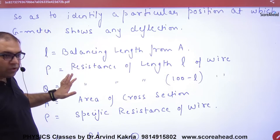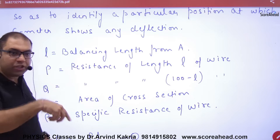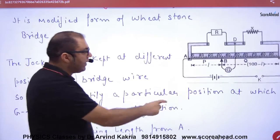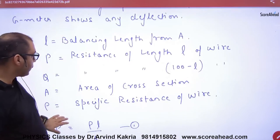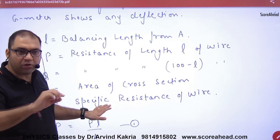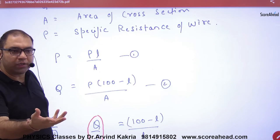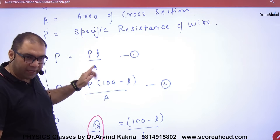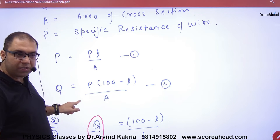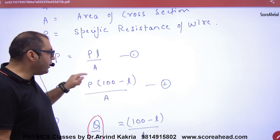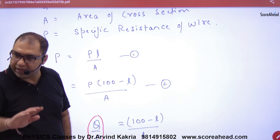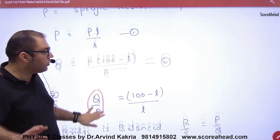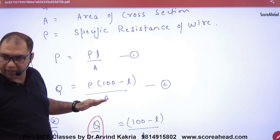L is the balancing length. The resistance P corresponds to length L, and resistance Q corresponds to length 100 minus L. Using the resistance formula R = ρL/A, we get P = ρL/A and Q = ρ(100−L)/A. When we divide P by Q, the values ρ and A cancel out, giving P/Q = L/(100−L).